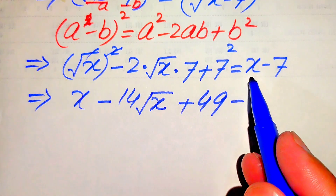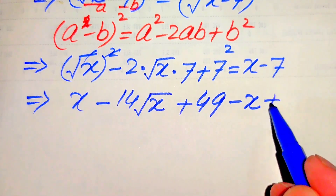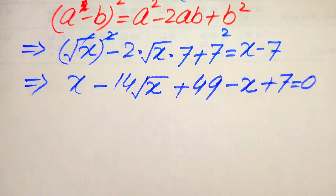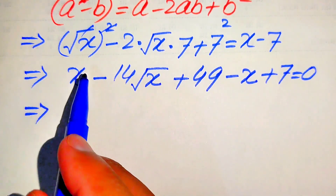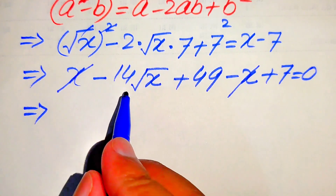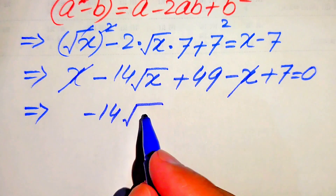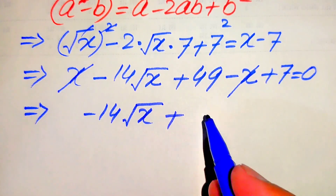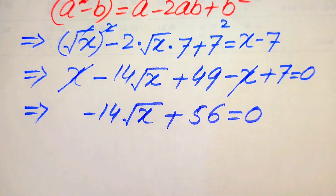The plus x when we move here it becomes minus x; this minus 7 when we move to the left hand side it becomes plus 7, and this whole equation is equals to 0. Now in the next step we add or subtract the like terms. The positive x and negative x cancel, and we get minus 14 times square root of x plus 49 plus 7, which is 56, equals 0.